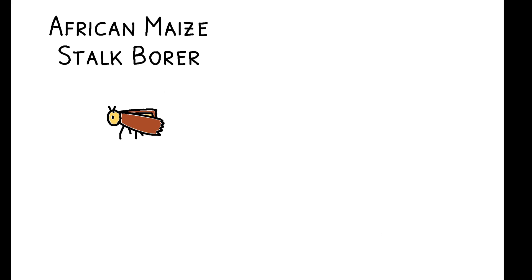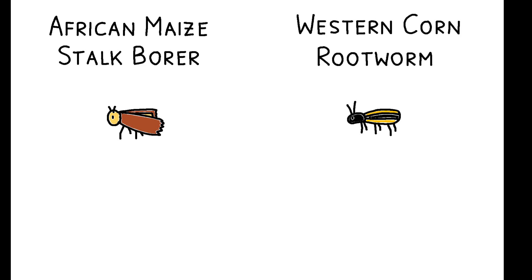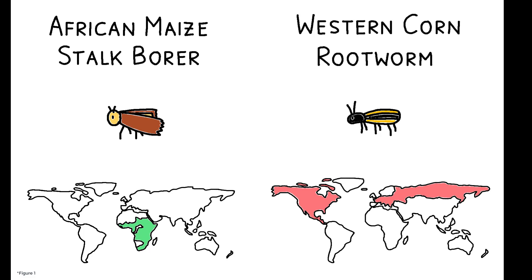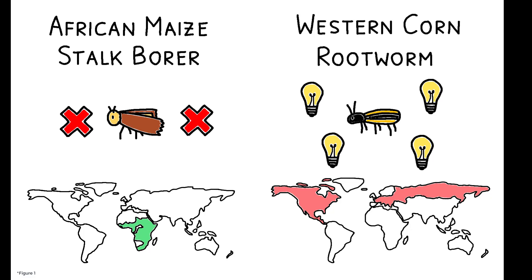As a concrete example, the African maize stalk borer and the western corn rootworm are both CPPs that affect maize. But while the stalk borer is present in Africa and not the US, the opposite is true of the rootworm. Because of its large impact on US production, the rootworm has been a major target for biotech innovation while the stalk borer has not, and as a result, genetically modified maize varieties are often ineffective in sub-Saharan Africa.